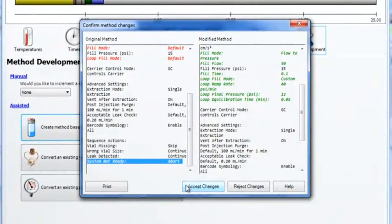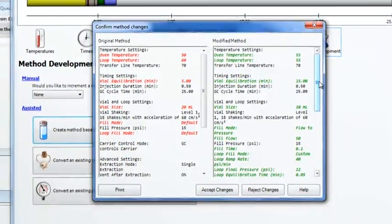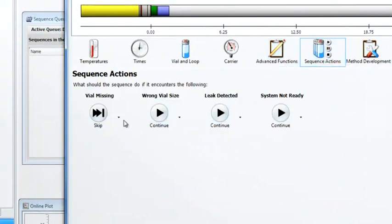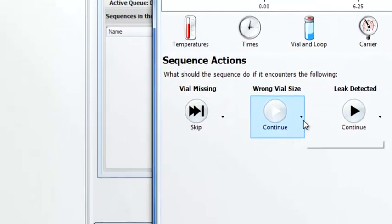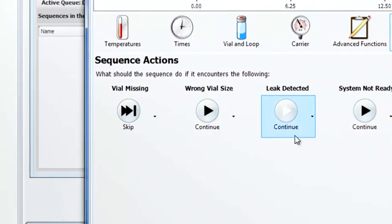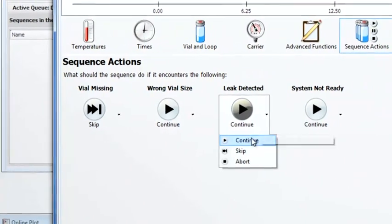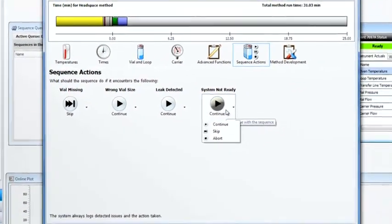The software guides you step-by-step through the method parameters with a familiar interface layout. The Sequence Action screen lets you specify courses of action for situations such as missing vials, unreadable barcode labels, or incorrect vial size. This allows you to adjust the 7697A Headspace Sampler to meet your workflow requirements.